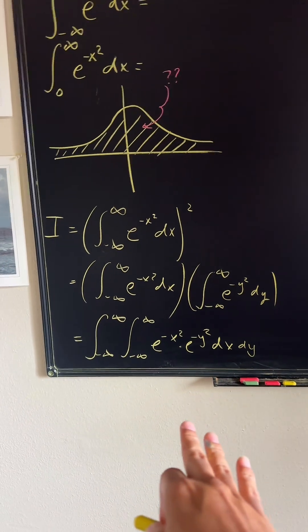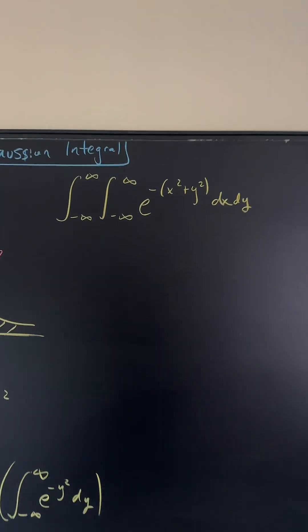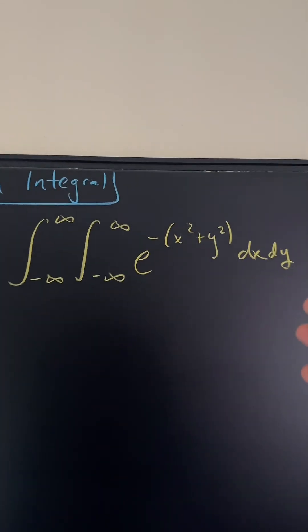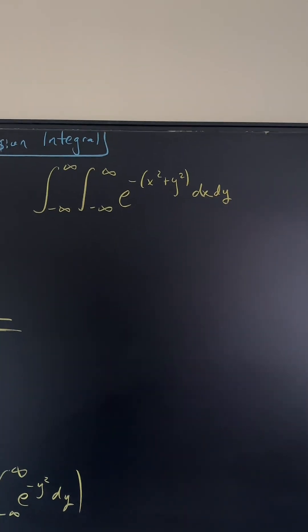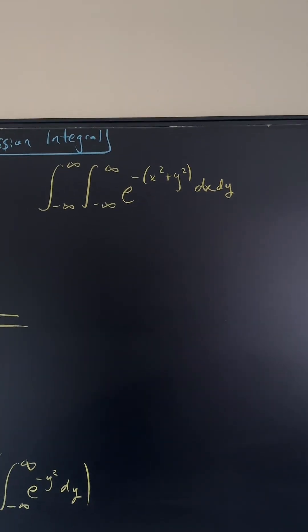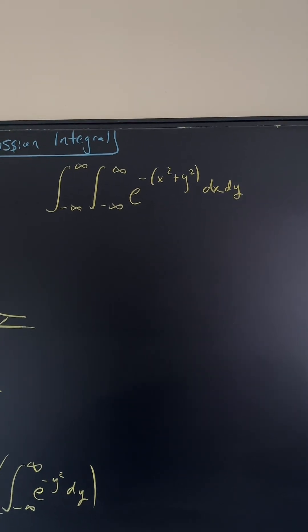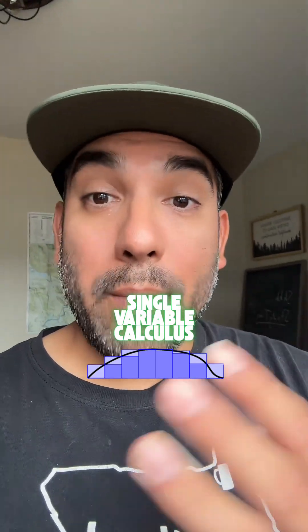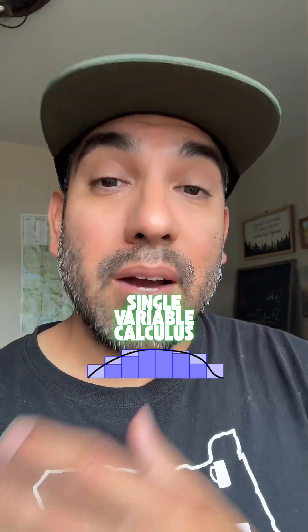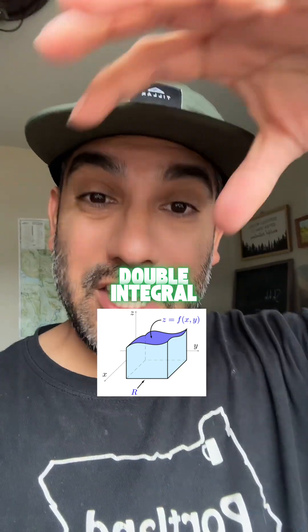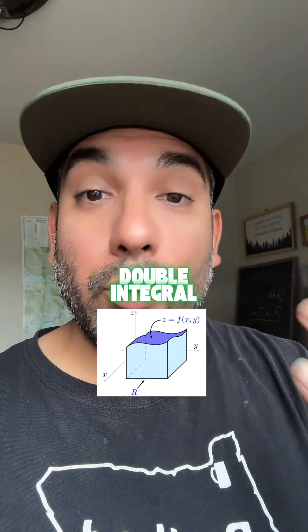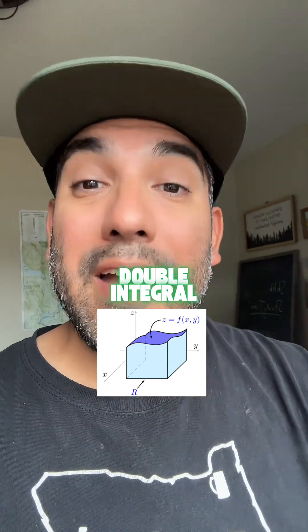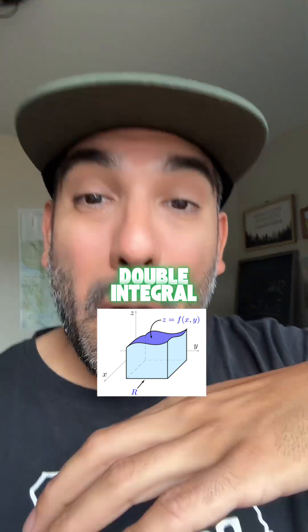Putting these together, I did some exponent magic and grouped them together — combining e to the negative x squared times e to the negative y squared into e to the negative (x squared plus y squared) — and it's still going to give me the same result. But let's talk about what this double integral actually represents.